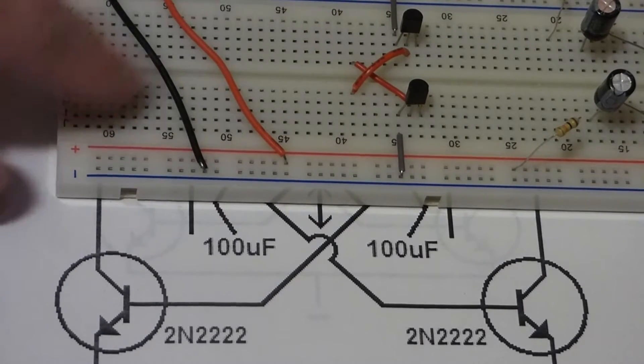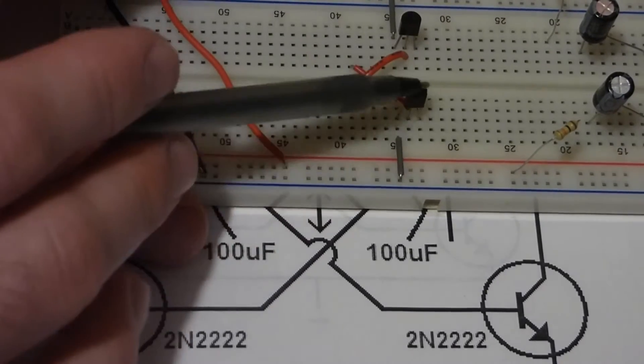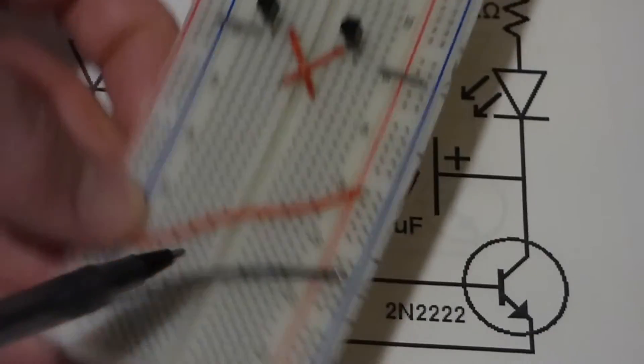So here's the bottom of the board. I have the board turned sideways. The flat side of each one of these transistors is pointing this way. Right now the flat side is to the right.